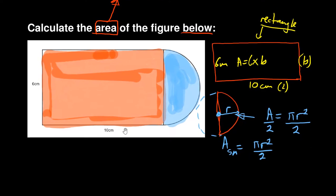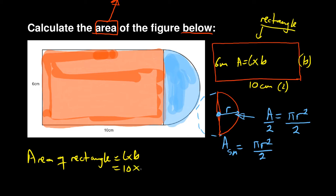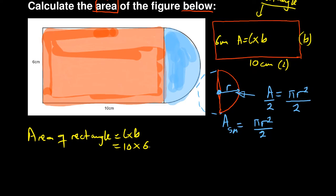For the rectangle, the area is length times breadth. Length is 10 and breadth is 6 — it's not a complicated shape. So your answer is 60 centimeters squared.